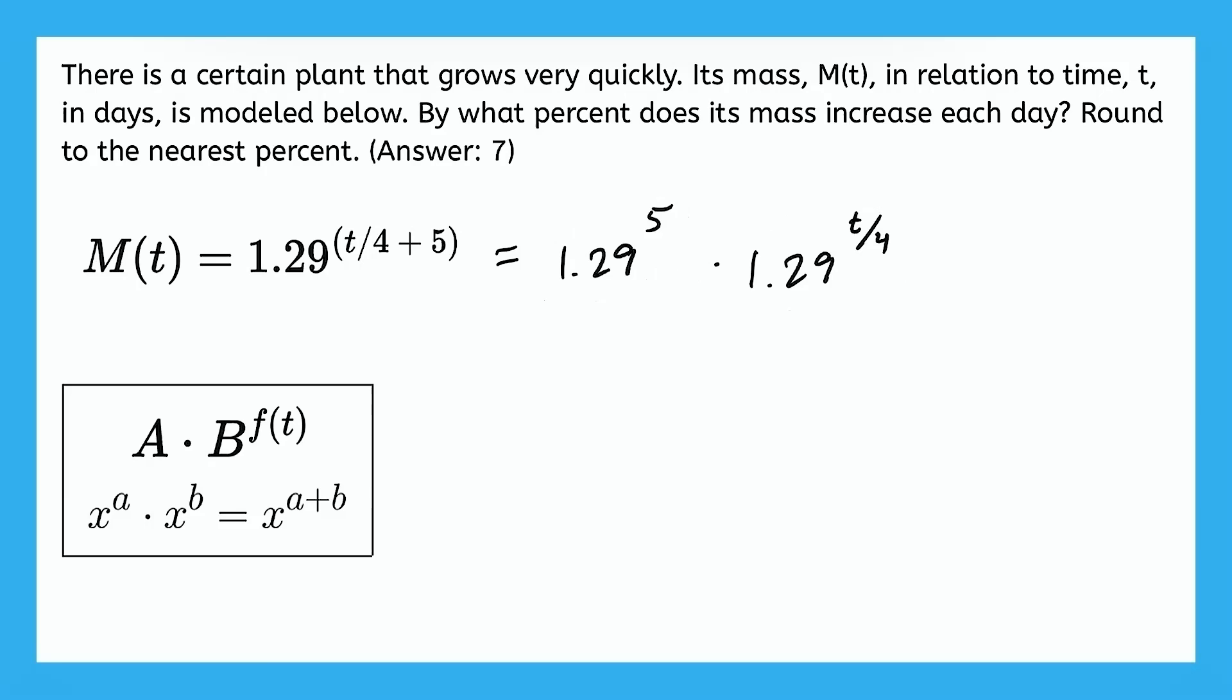So they're asking us about the percent increase in mass each day or every one day. So we just need to plug in 1 for t and then see what that does to this entire part of the expression. All right, so there's our 1 in place of t and we don't need to worry about this first part of the expression anymore because it does not involve a variable. So let's put this in our calculator and see what decimal we get.